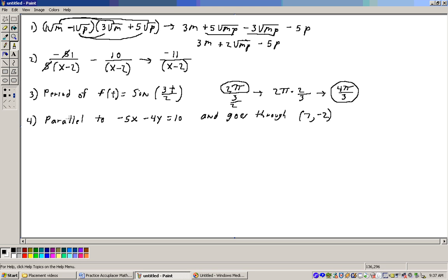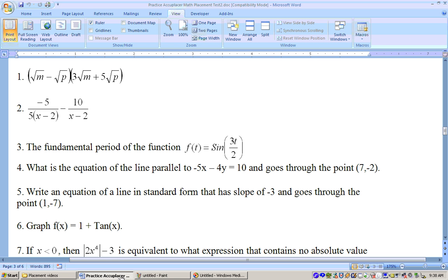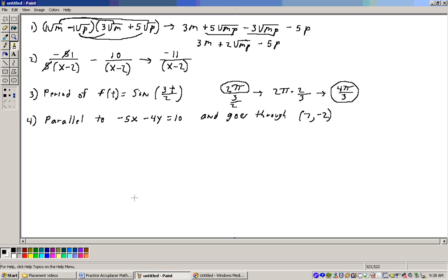Problem number 4 says get the equation of a line that goes parallel to minus 5x minus 4y equals 10 and goes through this point, 7 negative 2. And I may say even, I think it says to get this equation in standard form, let's take a look at this. No, it just says what is the equation of a line parallel to this and goes through that point. The next one says get the line in standard form. So let's go ahead and continue on with problem number 4 here. So parallel to this, if it's parallel to this, then it would have the same slope.